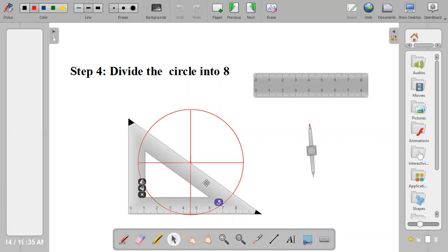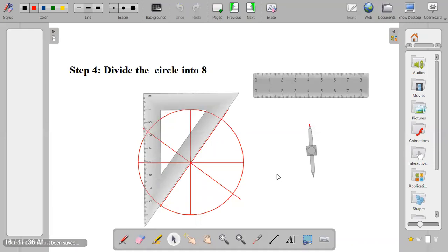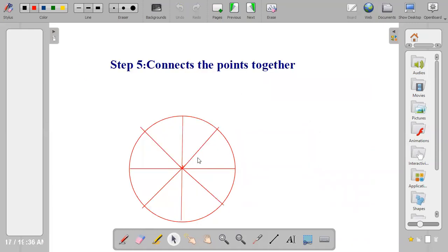So position it this way. Draw the other line. Now you have been able to divide the circle into 8 equal parts.